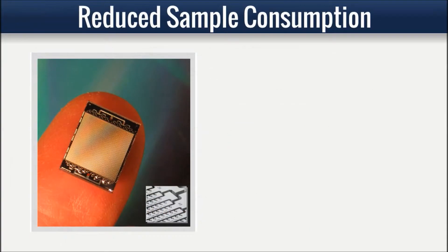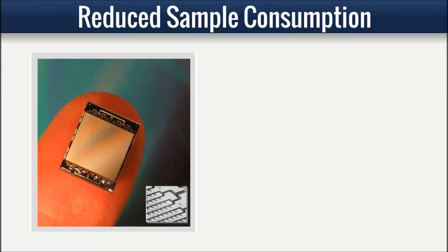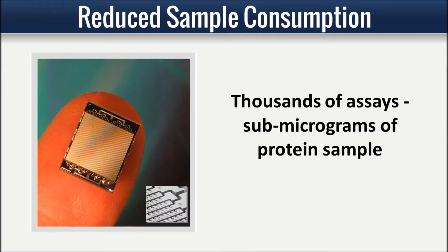Miniaturized array features reduce consumption of valuable samples to the sub-nanoliter to picoliter level per reaction. We can perform thousands of peptide assays per array using only sub-micrograms of protein.